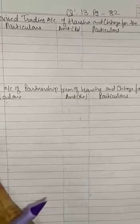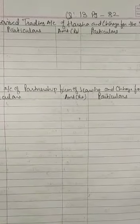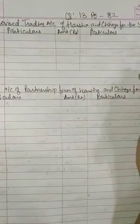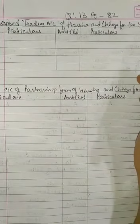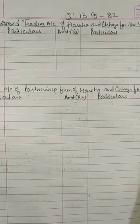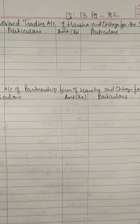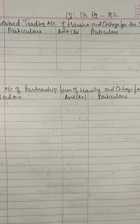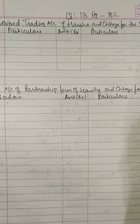Open page number 82, question number 13. In this question, you have to prepare the final account of the partnership firm of Harsha and Chaya. A trial balance is given, and in this question a trading account is also given.